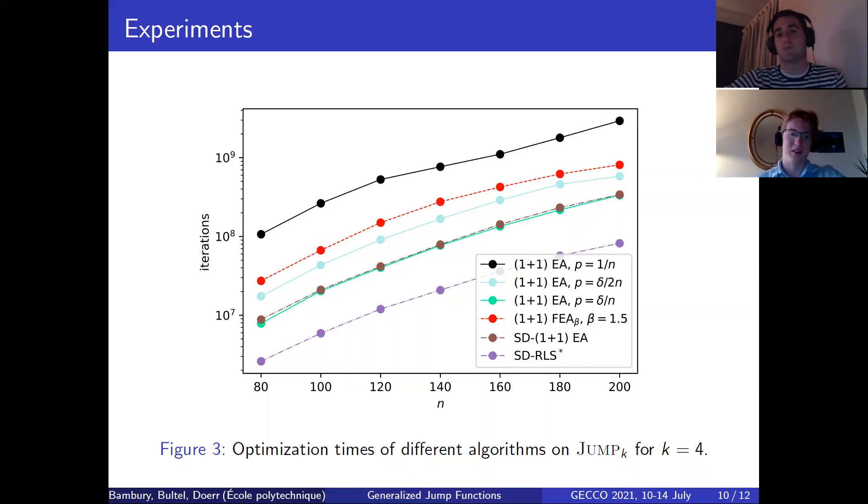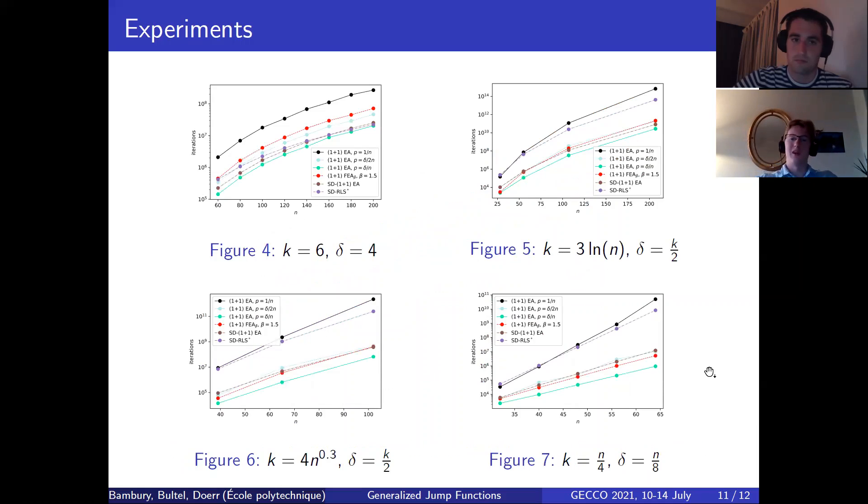So you can see this with the experiments. If you look at SD-RLS*, which is the curve in purple here, keep in mind that every single point is the average of 1000 runs of the algorithm. So on this instance, which is Jump_k, because k equals delta equals four, we can see that SD-RLS is really the master algorithm because it beats every single other algorithm we have here. So we've plotted the (1+1) EAs with different fixed mutation rates, we can see one over n in black is the slowest, then a suboptimal one with delta over two divided by n, and the optimal one in green, which is better than the blue one and the black one. We also have the fast evolutionary algorithm in red. And in brown, another algorithm we didn't discuss, which uses only stagnation detection added to the (1+1) EA.